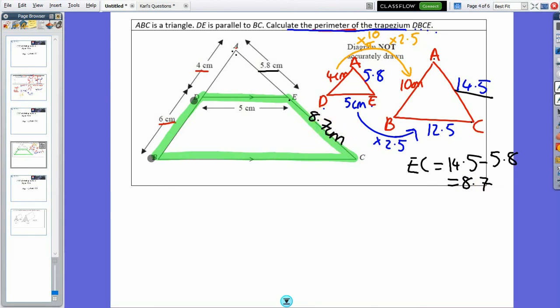And B to C, as I calculated on my red triangle, is 12.5 centimeters. So the total perimeter of my trapezium is going to be 6 plus 5 plus 8.7 plus 12.5. And I calculated that to be 32.2 centimeters.